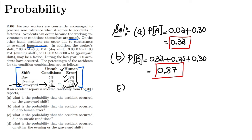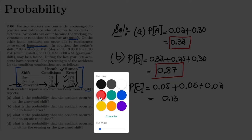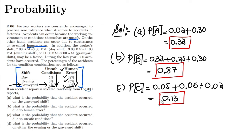Similarly, Part C: what is the probability that the accident occurred due to unsafe conditions? The unsafe conditions column covers day shift, evening shift, and graveyard shift. Let me call it event C. So: 5% (0.05) plus 6% (0.06) plus 2% (0.02). Adding them together gives 0.13, and that is the answer of Part C.